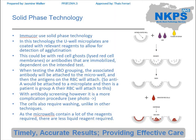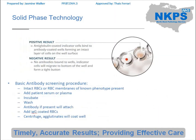If there is a positive reaction, the indicator red cells will be spread out across the well. If it's weakly positive then they'll be partially spread out but not all the way, and if it's negative they will form a little button at the bottom because all the red cells drop down and can't stay along the outside of the well. This is an example of what a negative and a positive result looks like. It's important to note this because when we go into the haemagglutination technology it's kind of the opposite to what you would expect, which can be very confusing when you first start out.